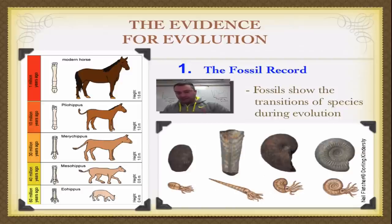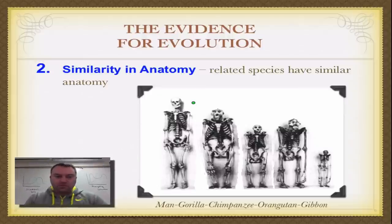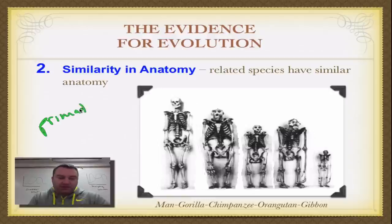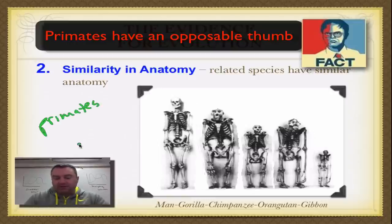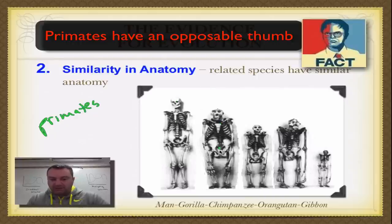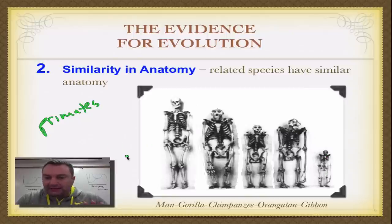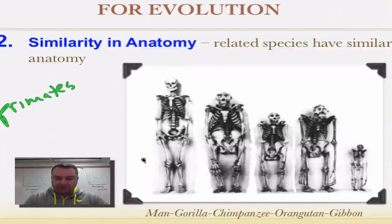The fossil record shows transitions from early ancestors to more modern individuals. Organisms or species that are closely related are going to have similar anatomy. As we can see here, comparing primate skeletons with a human skeleton — a gorilla, chimpanzee, orangutan, and gibbon — they look strikingly similar, with tons of human-like features visible.